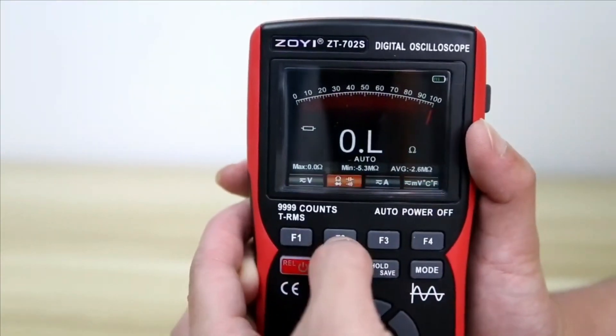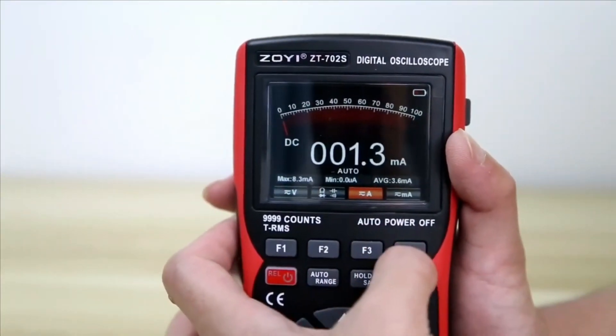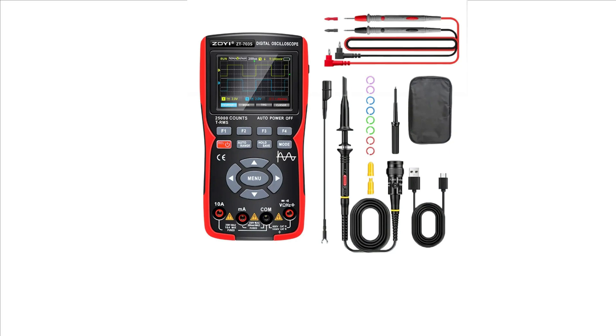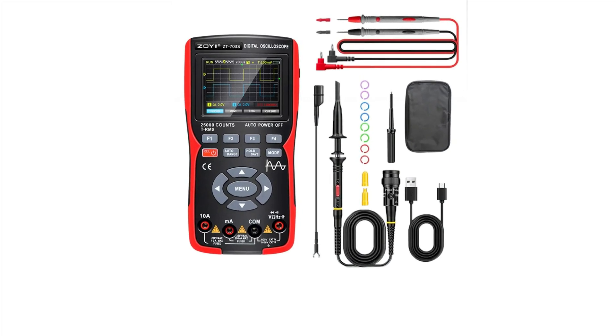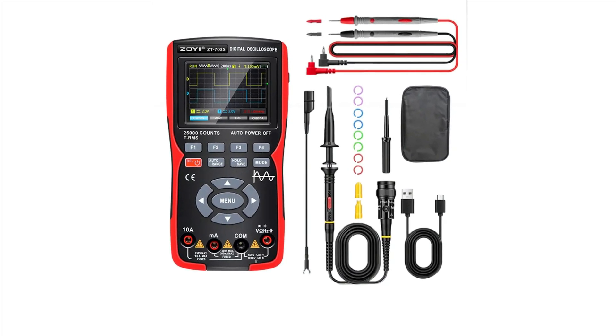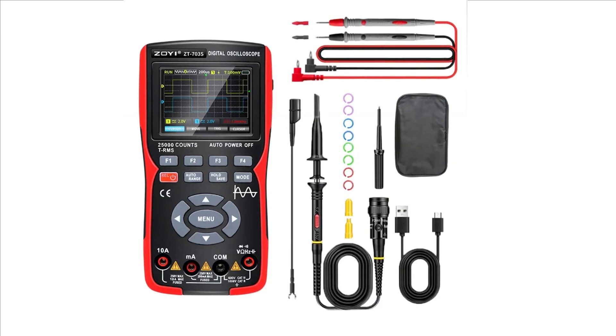The durable design, made from ABS TPE materials, is portable and easy to handle. The 2.8-inch HD color screen offers a clear and vibrant display, with features like auto power off, low battery alert, and screen backlight.